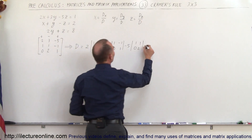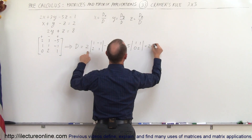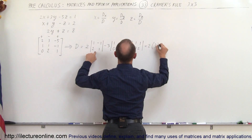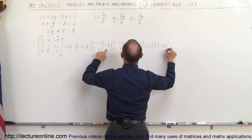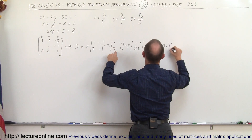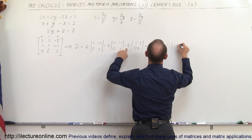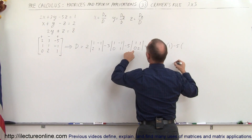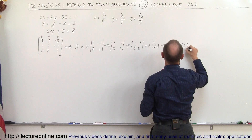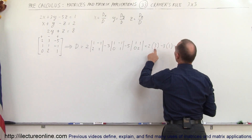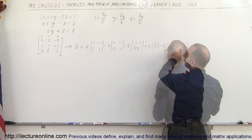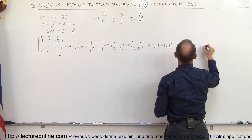Simplifying: we get 2 times (1 minus minus 2), which is 2 times 3; minus 3 times (1 times 1 minus 0), which is 1; and minus 5 times (2 minus 0). This gives us 6 minus 3 minus 10, which equals minus 7. So D equals minus 7.